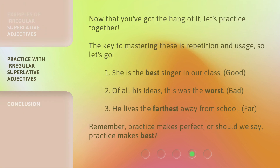Now that you've got the hang of it, let's practice together. The key to mastering these is repetition and usage. So let's go. One: 'She is the best singer in our class.' Good. Two: 'Of all his ideas, this was the worst.' Bad. Three: 'He lives the farthest away from school.' Far. Remember, practice makes perfect — or should we say, practice makes best.